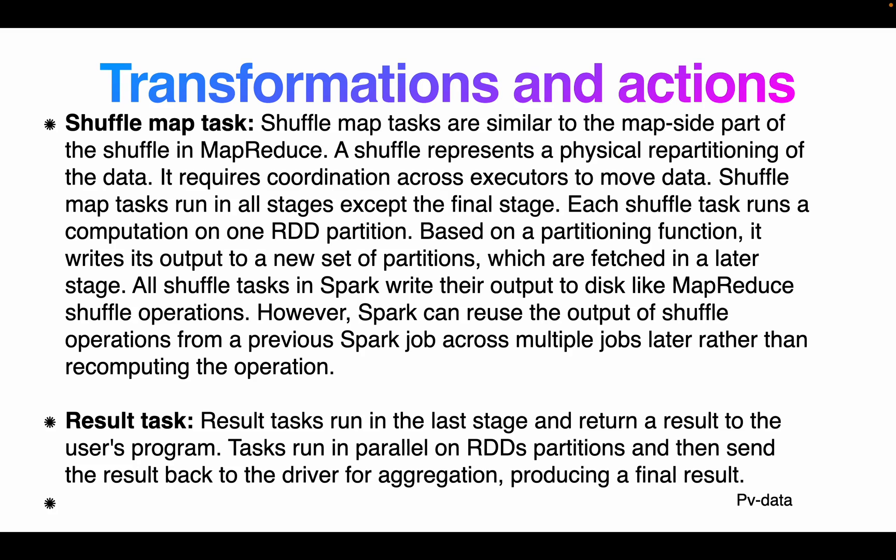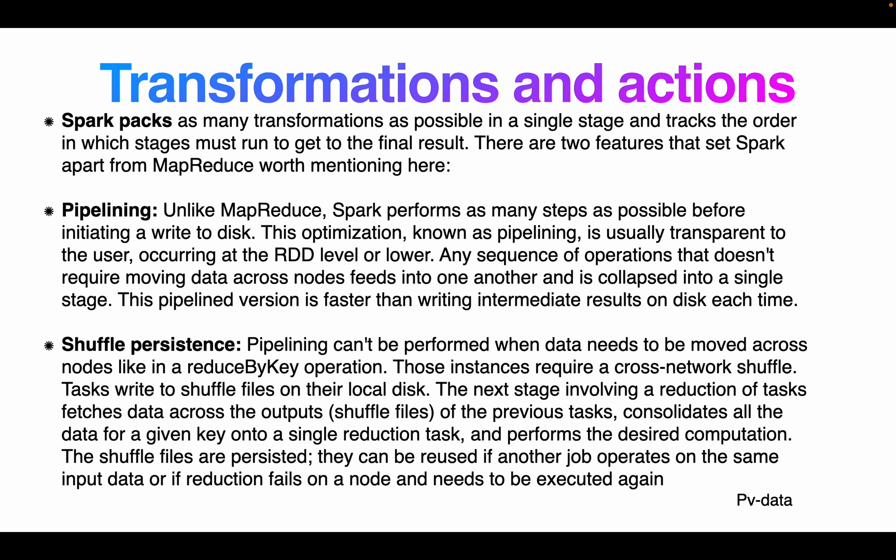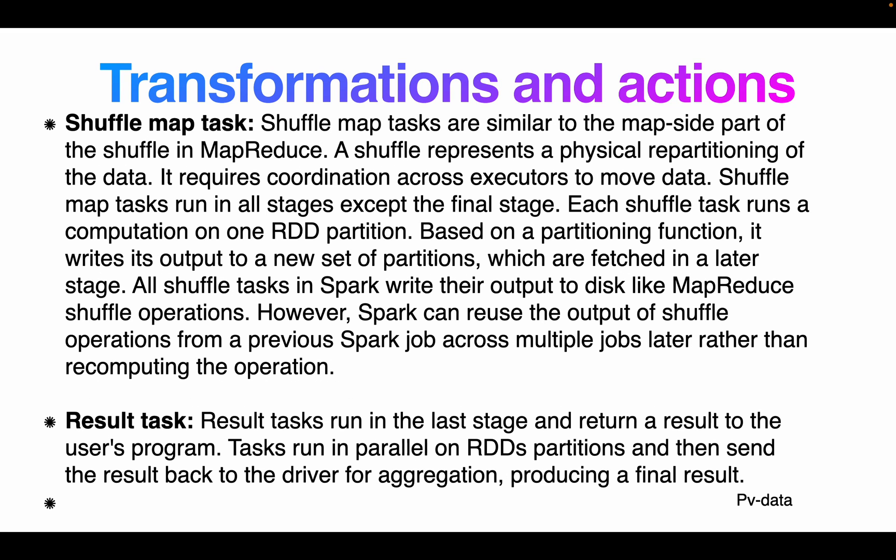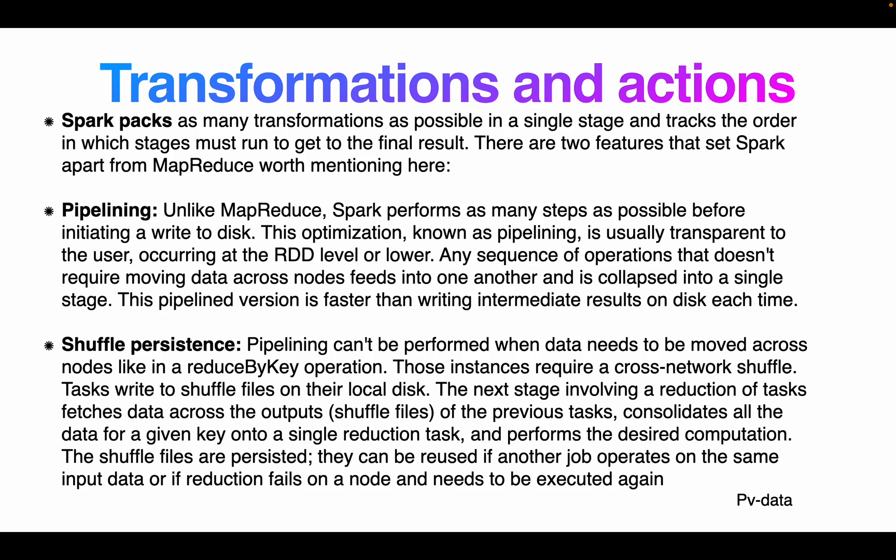Spark can reuse the output of shuffle operations from a previous job across multiple jobs rather than recomputing the result. Result tasks run in the last stage and write results to the user program. Tasks run in parallel on RDD partitions and send their result back to the driver for aggregation, producing the final result. These are the two task types: shuffle map tasks and result tasks. Spark also pipelines as many transformations as possible in a single stage and tracks which stages must run to get the final result.